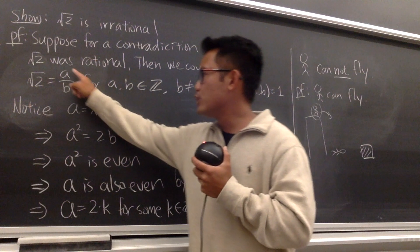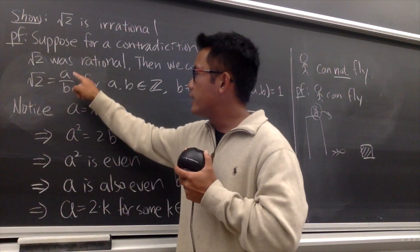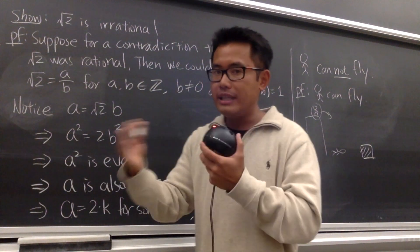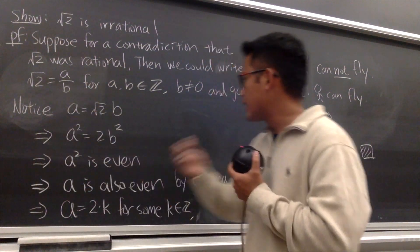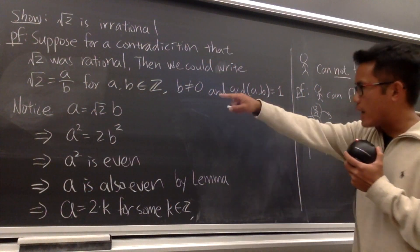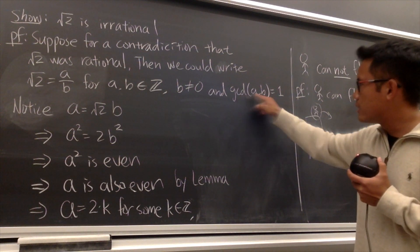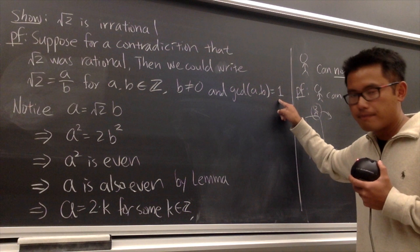Furthermore, because we have a fraction here, we can assume that once we write square root of 2 as a over b, we reduce the fraction already. In another word, the fraction is in the lowest term, and we can say the greatest common divisor of a and b is just equal to 1.